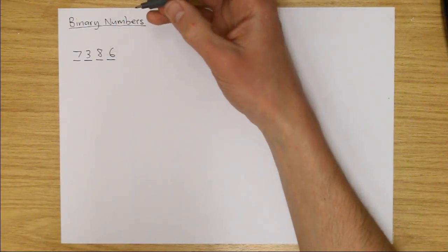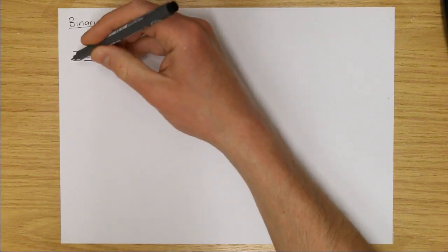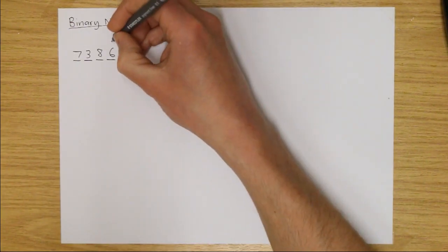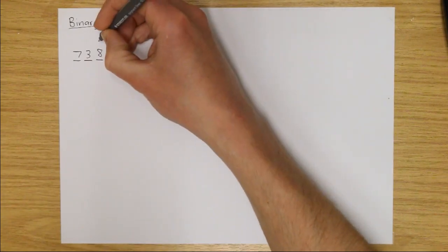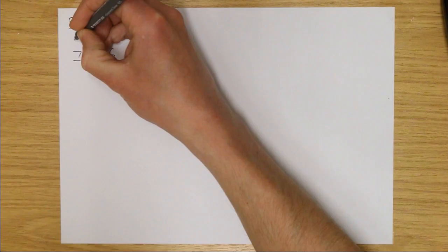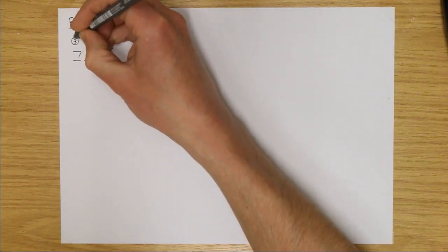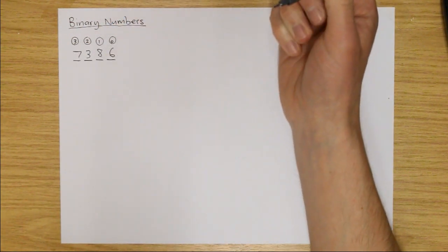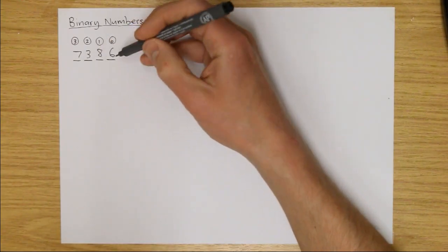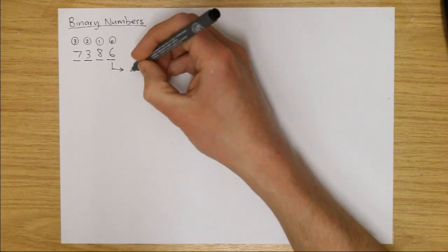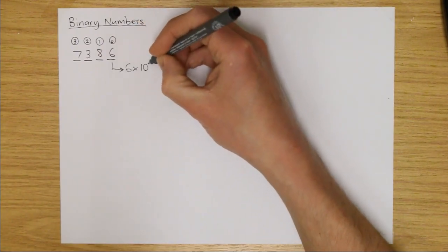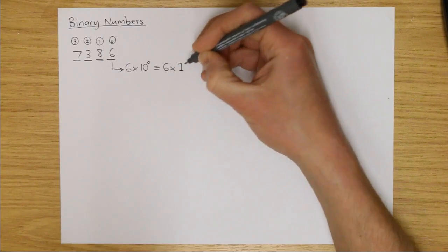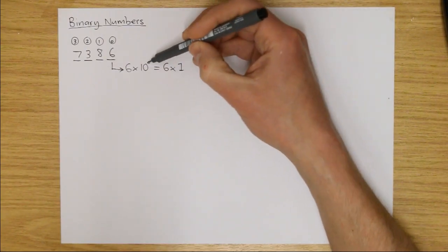For reasons which will become clearer as we go along, I'm going to number the digits in this number beginning with the rightmost, or the lowest valued digit — what we sometimes call the least significant digit — and I'm going to number that digit zero, then digit one, digit two, and digit three. Any number to the power of zero is equal to one, so digit zero, which is six, represents six times 10 to the power of zero, which equals six times one.